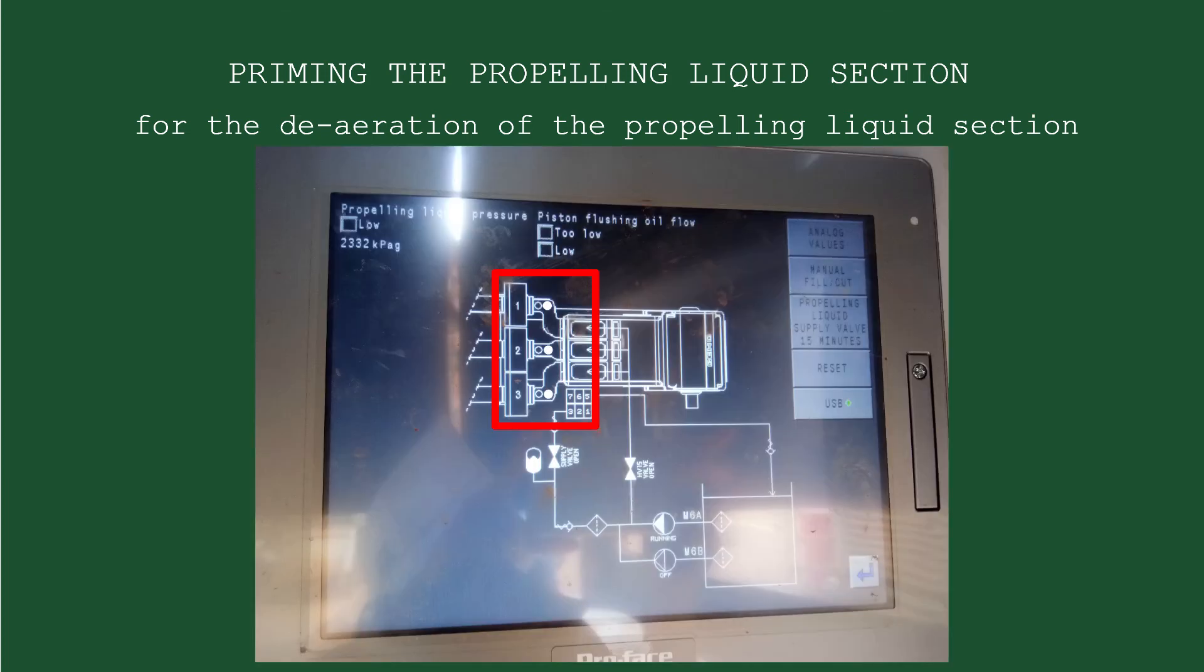Since the ZSL for the diaphragms are activated, the filling starts as soon as the propelling liquid pump is switched on and the main supply valve is opened by pushing the main 15-minute supply valve button in the Geho pump panel.